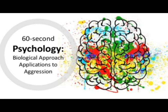The biological approach accounts for aggression in several ways, including evolution, genetics, neurochemistry and neuroanatomy.